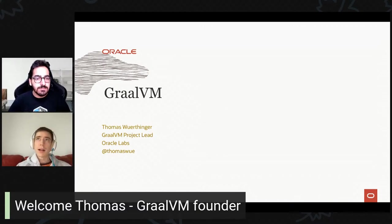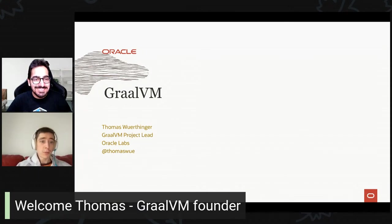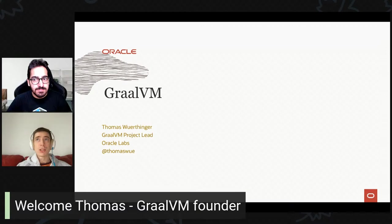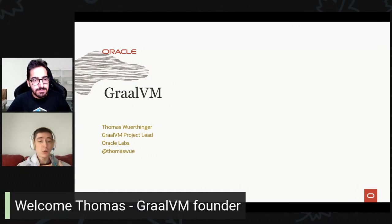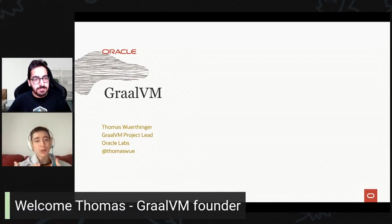Back then I was using the C1 just-in-time compiler — the client compiler in the HotSpot virtual machine written in C++ — as the source, and I was translating this C++ compiler to Java. We always thought: why are all these virtual machines and compilers written in C++? Java is certainly one of the most productive languages out there, and we really wanted to push the envelope.